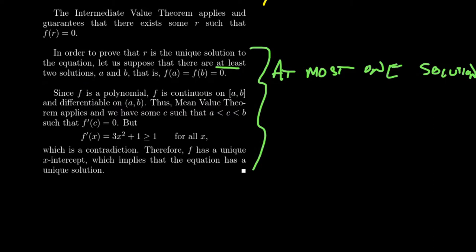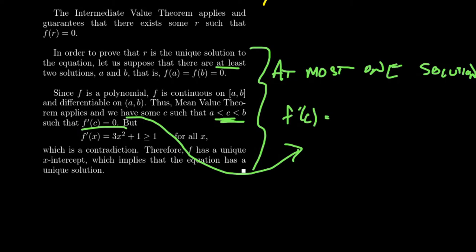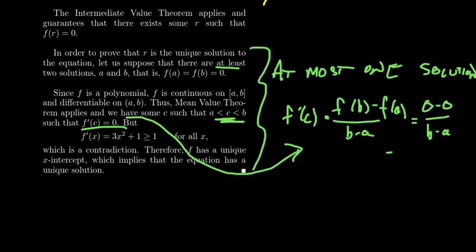The mean value theorem says there's going to be some number c between a and b such that the derivative of f at c equals the average rate of change: f prime of c equals f of b minus f of a over b minus a. Since a and b are both roots, f of a and f of b are both 0. So we get 0 minus 0 over b minus a, which equals 0. The mean value theorem therefore guarantees that the derivative equals 0 at some number c.